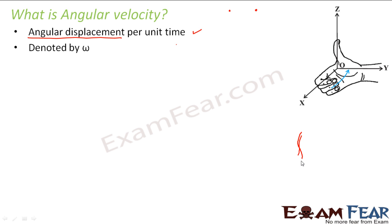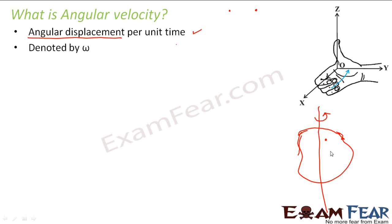Let us take the example of a rigid body rotating about an axis of rotation. The term angular comes into picture when talking about rotation, because every particle in the entire object will be moving in a circular path. So there is no linear motion involved. Every particle moves in a circular path, in a plane perpendicular to the axis of rotation, and the center of that circular path lies on the axis of rotation.